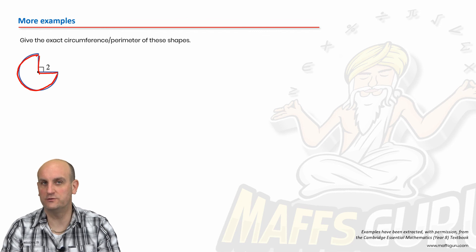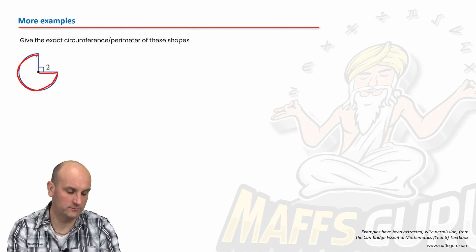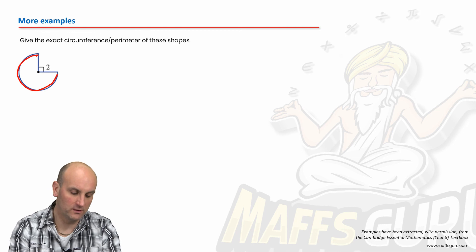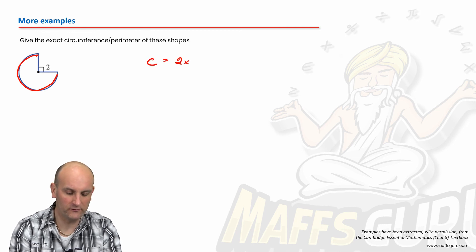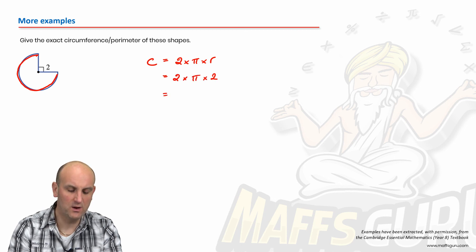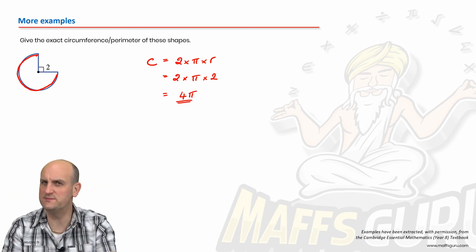But, as normal, let's find the circumference of my whole circle. So my circumference of my whole circle is 2 times pi times radius, which is 2 times pi times 2, which we now know is 4 pi. That's my whole circle.